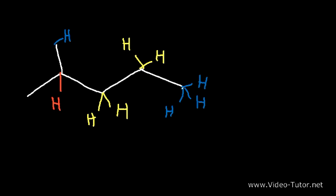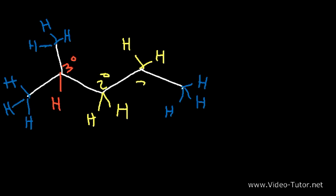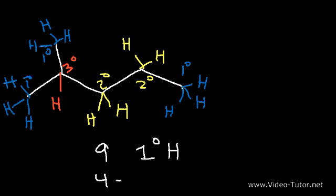Sometimes you may need to identify which hydrogens are primary, which ones are secondary, and which ones are tertiary. A hydrogen that's attached to a tertiary carbon is a tertiary hydrogen. Hydrogens attached to a secondary carbon are secondary hydrogens, and these are primary hydrogens. So as you can see, we have nine primary hydrogens, four secondary hydrogens, and only one tertiary hydrogen.